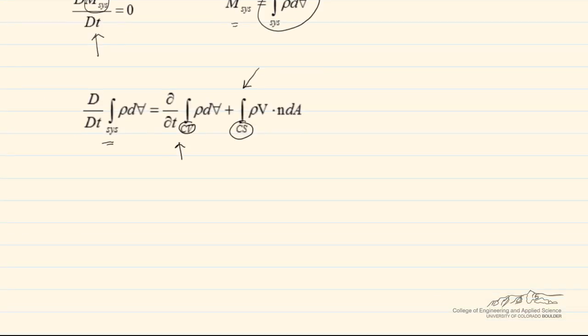Note that the system and control volume can be, but aren't always the same as I show you here. At some instant in time, this dashed line can denote the control volume where the solid is the system.